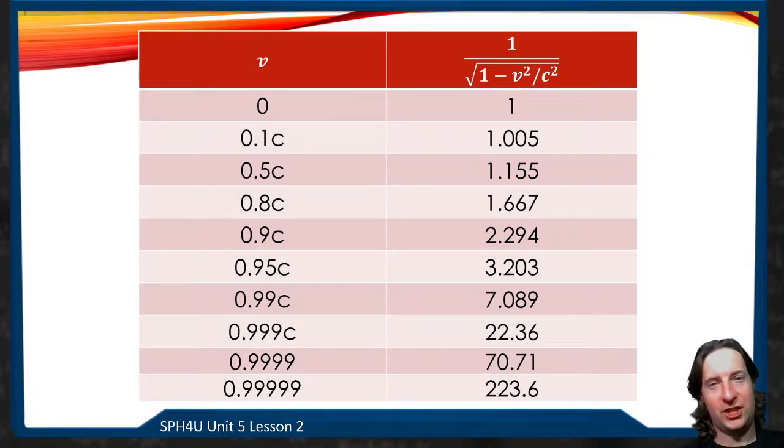But even at that ridiculous speed, it's only going to change the rate of time or this gamma term, this is gamma here. It's only going to change it by, you know, 0.5%. It's only when we start getting very fast, you know, half the speed of light, we're only going to change things by 15%.